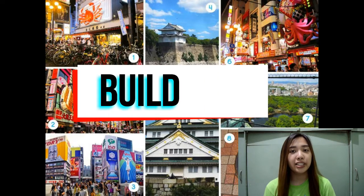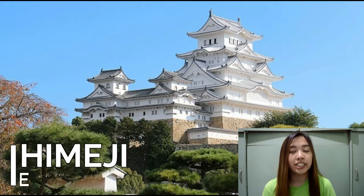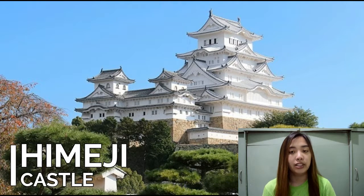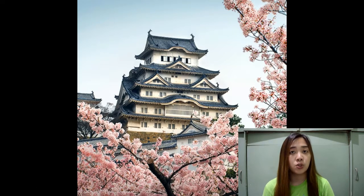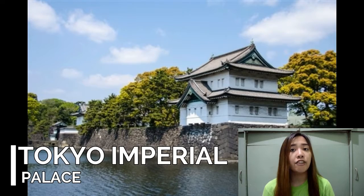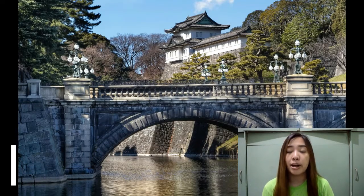Here are the top five structures you will encounter on a Japanese tour. Himeji Castle contains 83 buildings made of wood. This great structure is also known as White Heron because of the white plaster that covers its walls. Tokyo Imperial Palace is the residence of the Japanese royal family, used for state receptions and as the holding place for official state ceremonies.